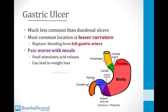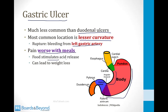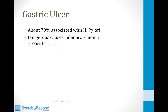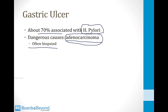Gastric ulcers are much less common than duodenal ulcers, and the most common location is the lesser curvature of the stomach. If they rupture through the wall, they can cause bleeding from the left gastric artery, which courses along the lesser curvature. In contrast to duodenal ulcers, pain in gastric ulcers is typically worse with meals — because food stimulates acid release, exposing the ulcer to more acid — sometimes leading to fear of eating and weight loss. About 70% of gastric ulcers are associated with chronic H. pylori infection, and importantly, gastric ulcers are often biopsied to exclude adenocarcinoma.